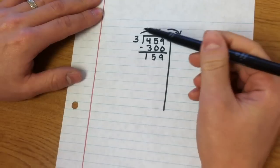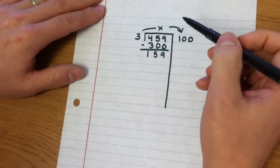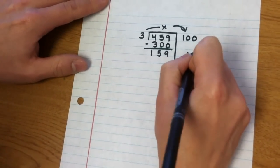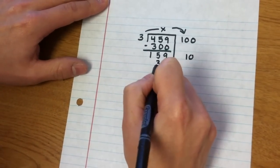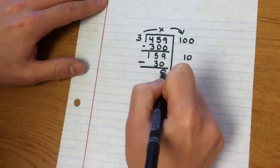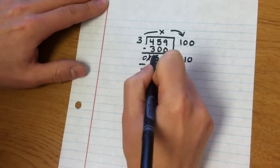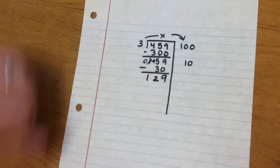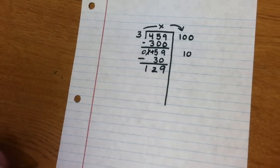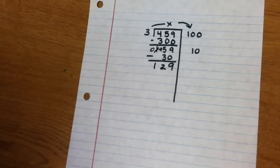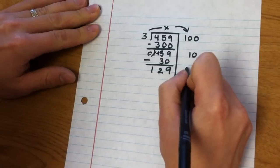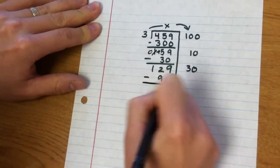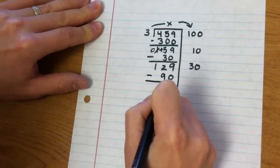Alright, so now I could say, I know that 3 times, let's see, I could do 3 times 10 is 30. Regroup this. Oh, I didn't need to do that. Oops. 129. 129. And I could say, I know 3 times, let's say 3 times 30. 3 times 30 is 90. So I'll go ahead and subtract that. And I would get 39.